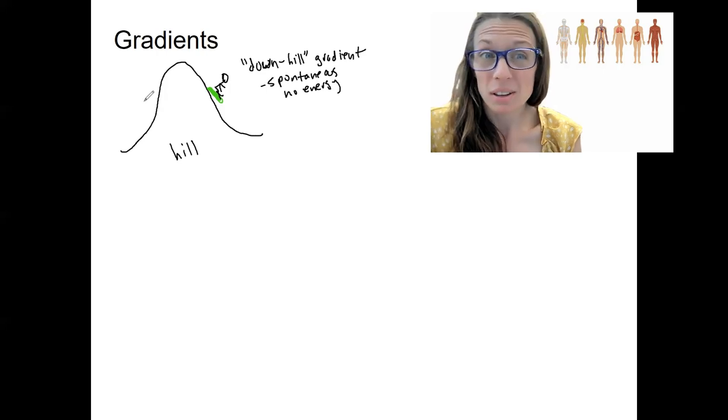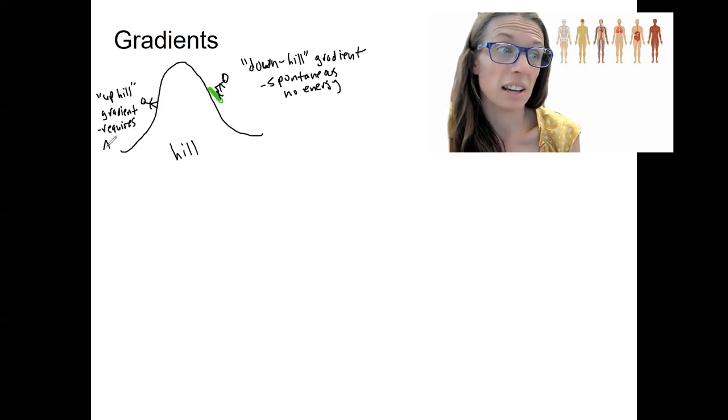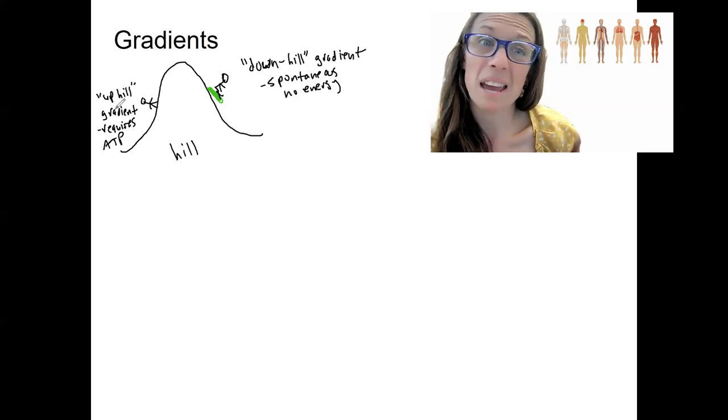When they went up the hill in the first place, to get up the hill, there is work required energy. So this uphill gradient does require ATP. In this case, literally like muscles contracting to go up the hill, and our body is going to be ATP.